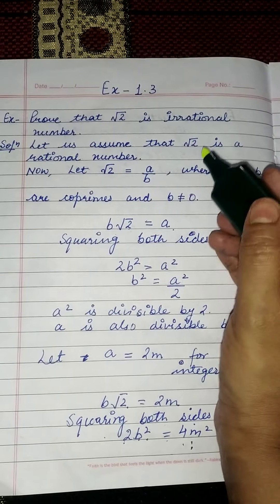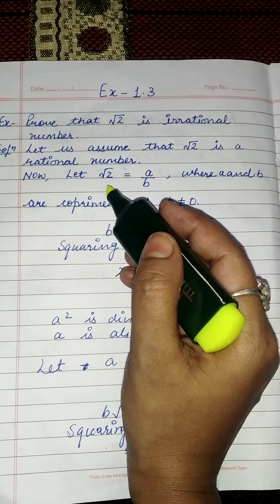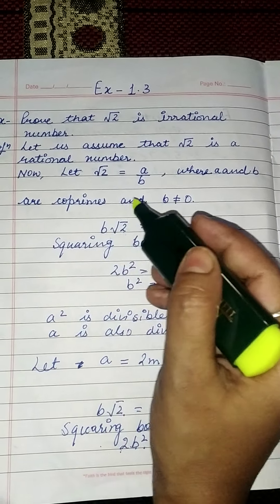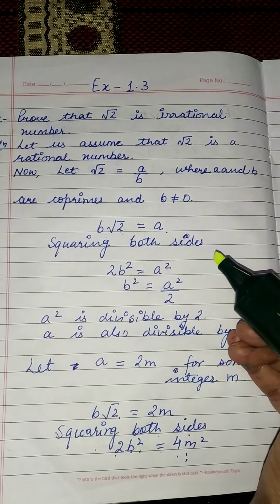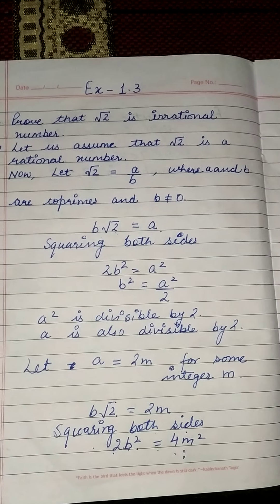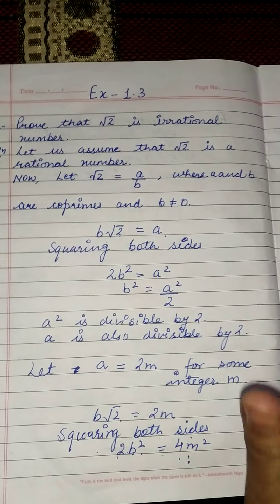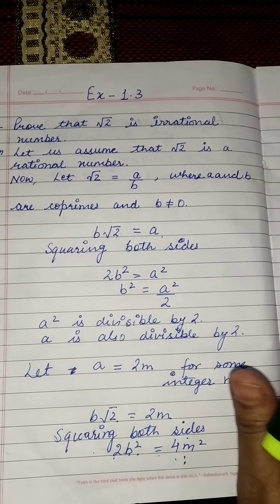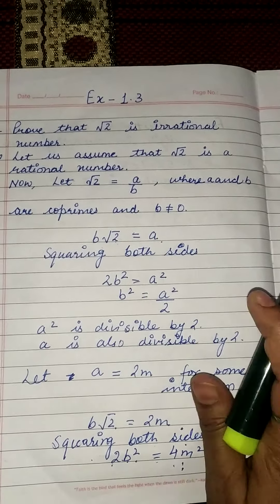So let us assume that under root 2 is a rational number. If it is a rational number, then it can be written in the form a upon b, where a and b are coprimes and b is not equal to 0. Coprime means a pair of numbers in which the common factor is 1. For example, 2 upon 3 — the common factor of 2 and 3 is only 1, so 2 and 3 are coprime.